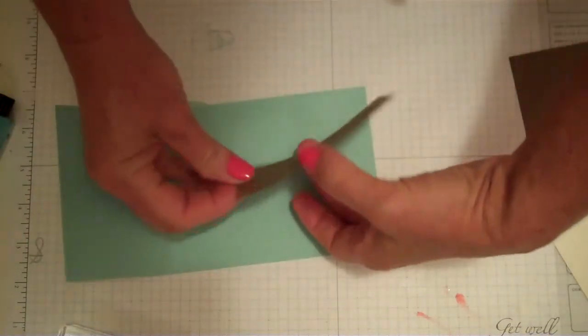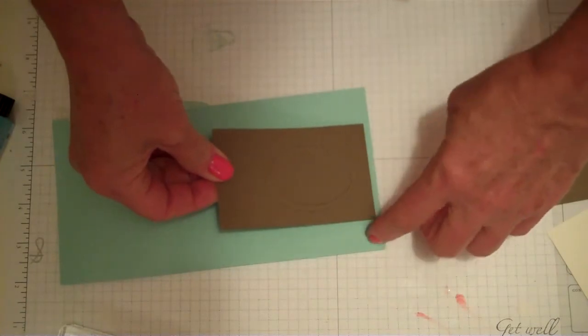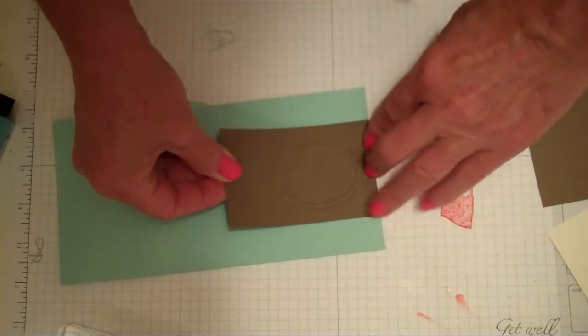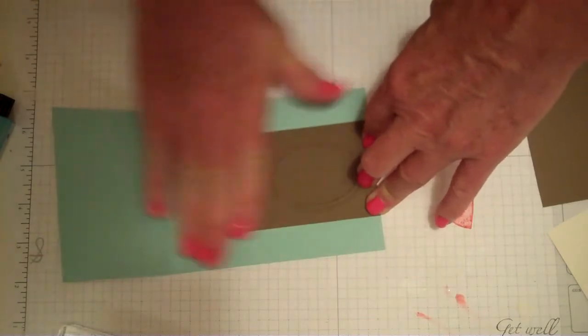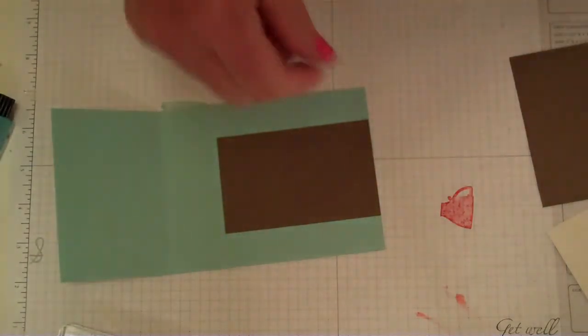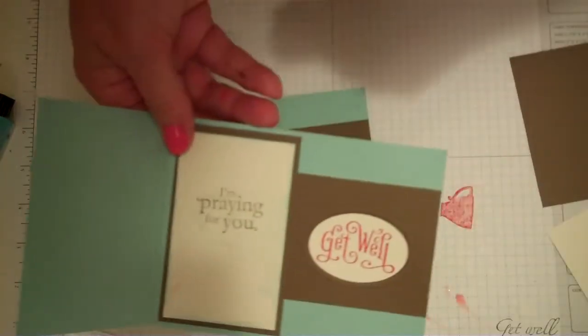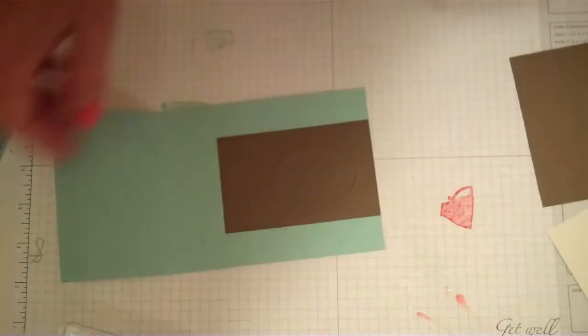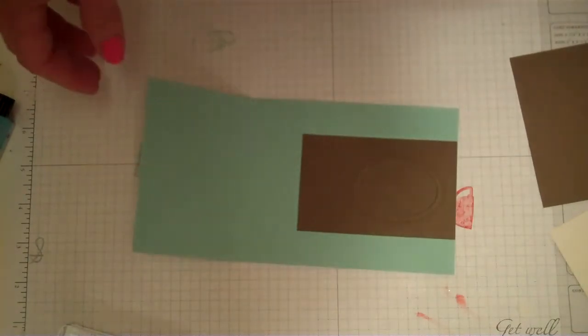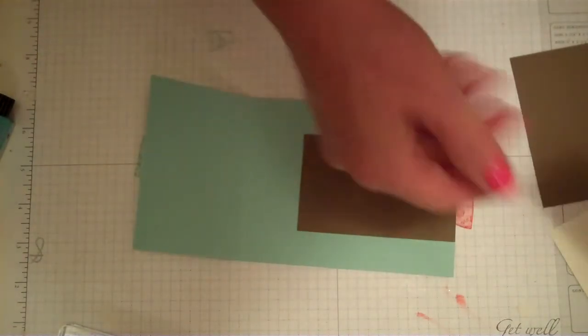Now we're going to glue this piece down. The only thing that matters is that you get it even margins top and bottom and clear to the edge because you're going to bring your piece on the inside, it's going to cover up the edge.